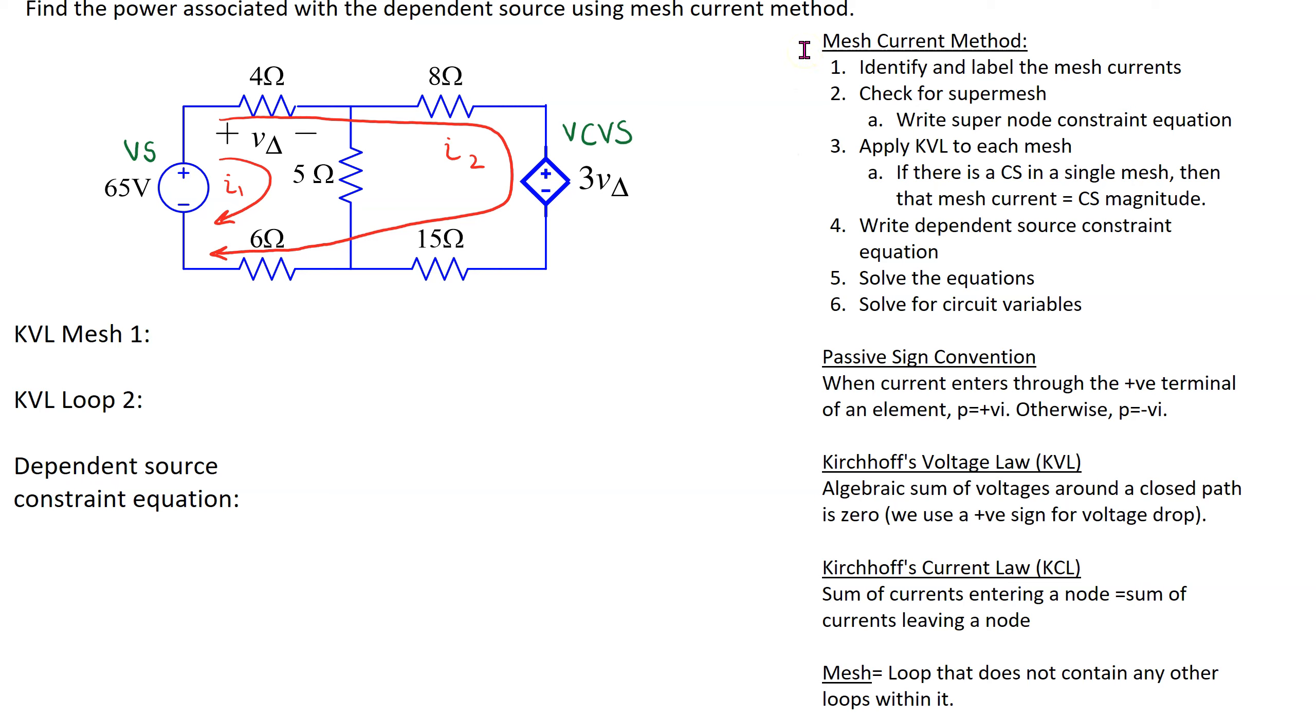When applying mesh current method the first step is to identify and label the mesh currents. Consider this given circuit of interest which has an independent voltage source and a dependent source which is a voltage controlled voltage source. This circuit has two meshes.